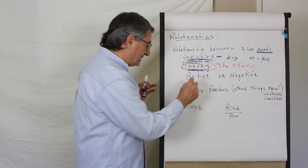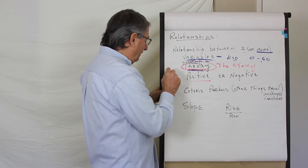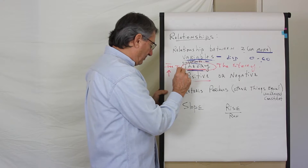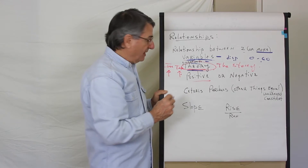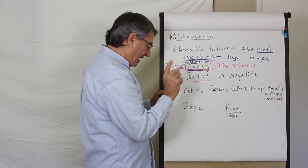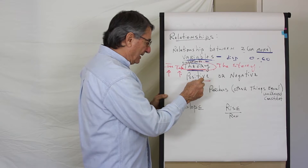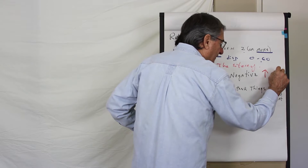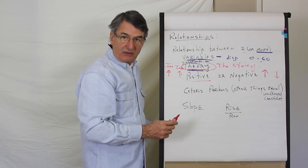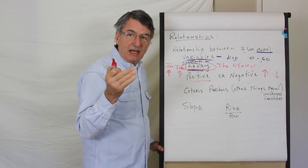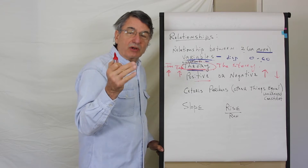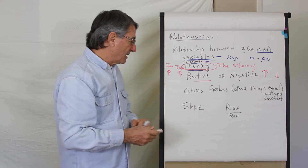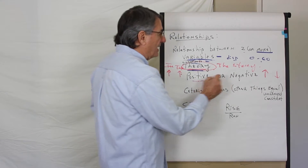Some relationships are positive. In positive relationships, one variable increases and the other increases — like my income and the taxes I pay. If income goes up, taxes go up; if income goes down, taxes will go down as well. But some relationships are negative: when the value of one variable goes up, the value of the other goes down. An example would be the price of a Porsche Carrera — if it goes up, fewer will be purchased in our market. So there are relationships that are positive and some that are negative.